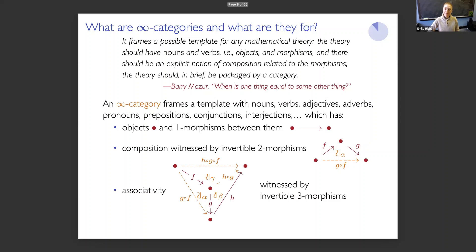Associativity is not an equation anymore, but rather a coherence condition between witnesses. Here I've drawn three composable one-morphisms f, g, and h, with some specified composites witnessed by two-morphisms alpha, beta, and gamma. There should be a fourth two-morphism on the back of this tetrahedron, and a three-morphism would inhabit that three-dimensional space witnessing a coherence condition between these two-dimensional morphisms. And this continues all the way up. So this is the idea of an infinity category.